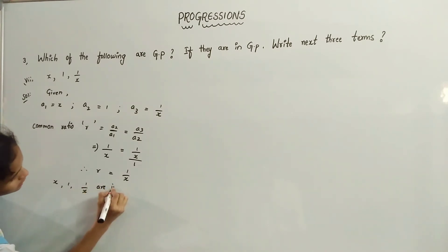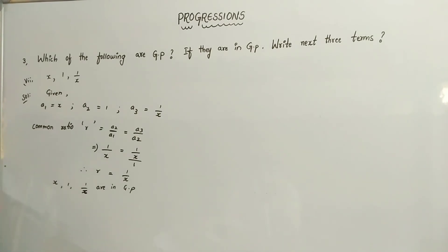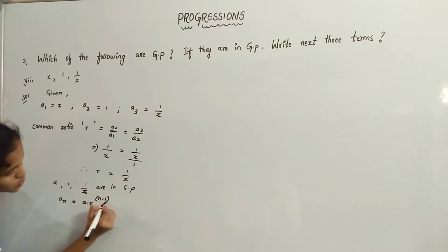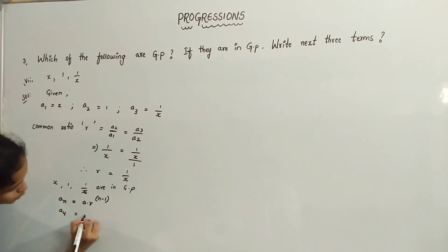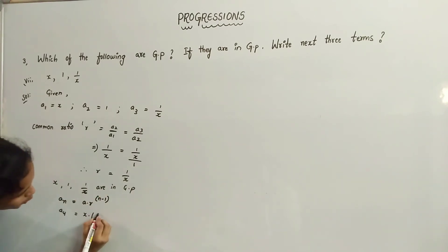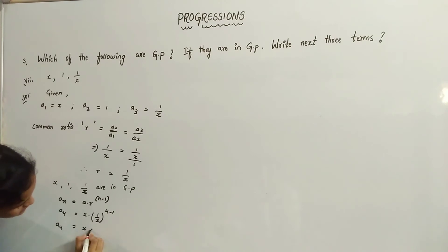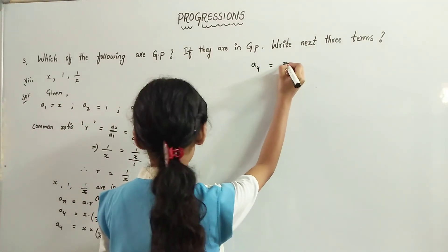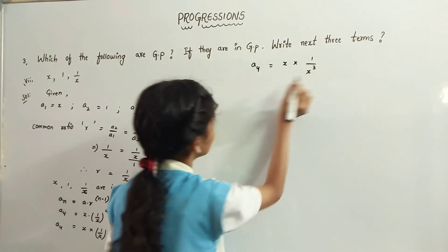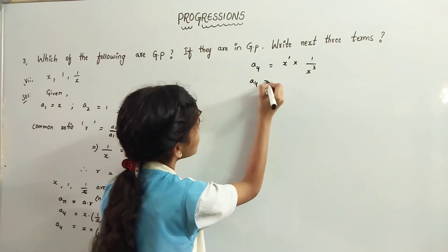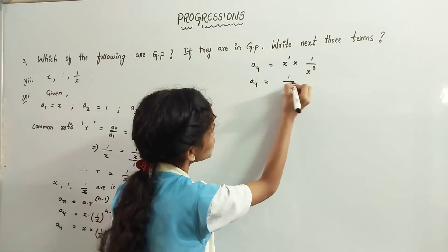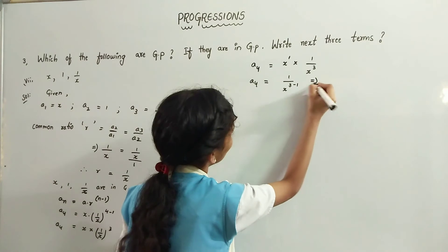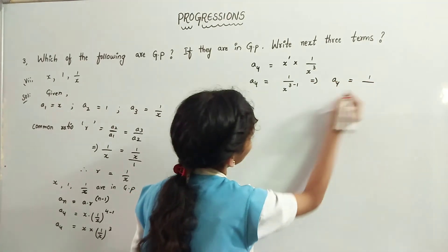Now we have to find next three terms: A4, A5, and A6. The general form of GP is An equals A into R to the power N minus 1. A4 equals A is x, into R is 1 by x, to the power 4 minus 1, which is x into 1 by x to the power 3. Since x is x to the power 1, when bases are equal, exponents are subtracted: 1 by x to the power (3 minus 1). Therefore A4 equals 1 by x squared.